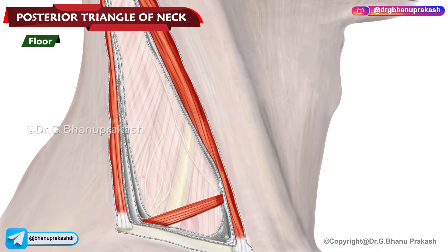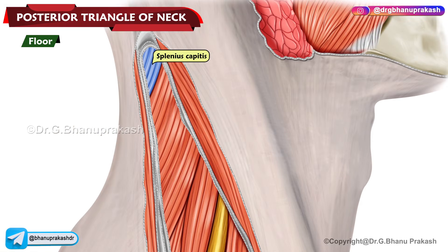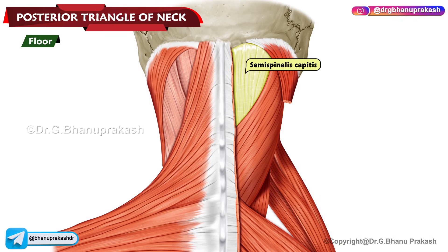The floor of the posterior triangle is formed by the prevertebral layer of the deep cervical fascia covering the following muscles: the splenius capitis, the levator scapulae, the scalenus medius, and the semispinalis capitis muscles.